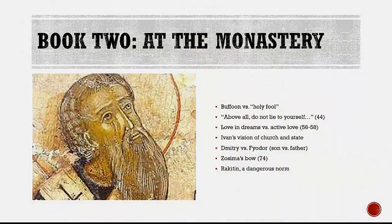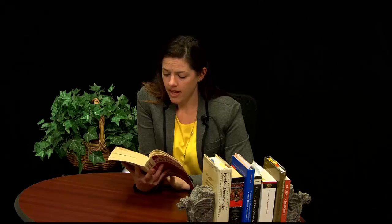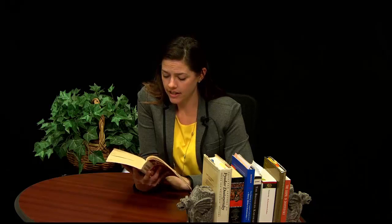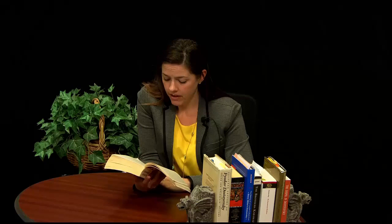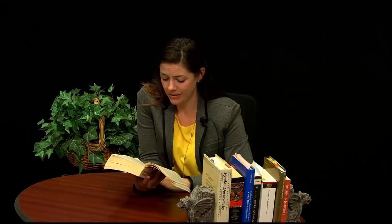After these introductions, we are introduced to Father Zosima — at least by reputation, before Book 2. We hear about the Elder Zosima, and here is an icon of him. Elders in the monastery, instituted back to Sinai and Athos, have existed for a thousand years. An elder is one who takes your soul and your will into his own soul and his own will.